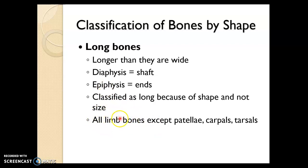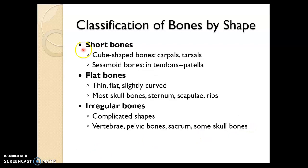So all the bones in your limbs are long bones except the patella, which is the kneecap, carpals, which are wrist bones, and tarsals, which are ankle bones. Short bones are approximately as long as they are wide and somewhat cube-shaped, like your wrist and ankle bones — carpals and tarsals — and sesamoid bones, which develop in tendons, like your patella, are short bones as well.